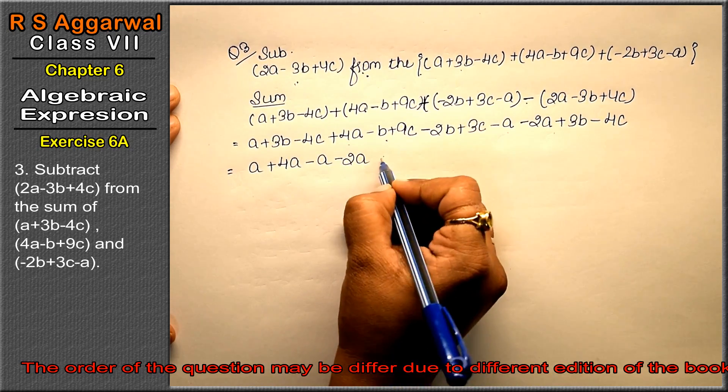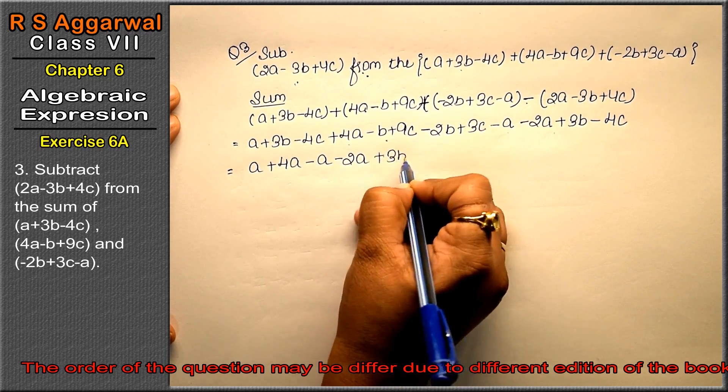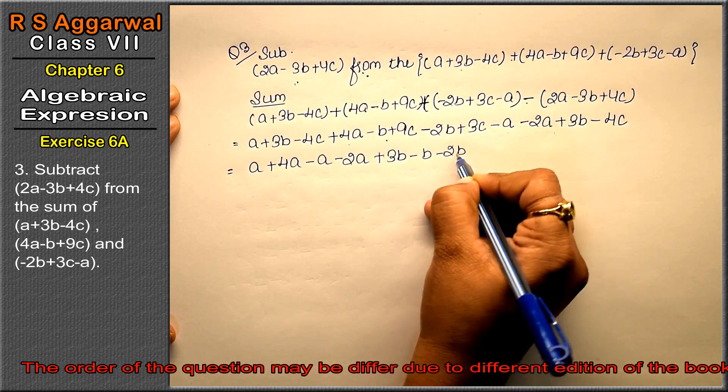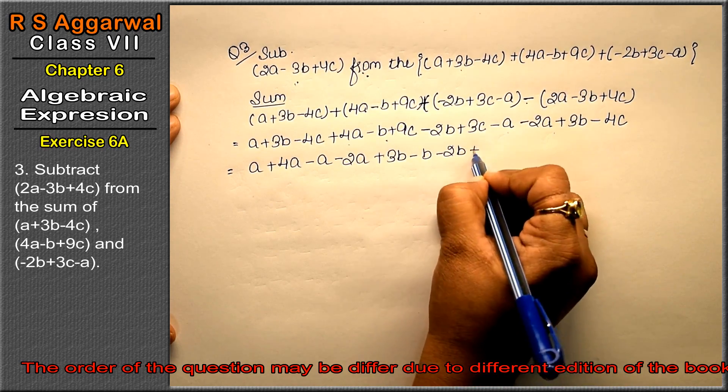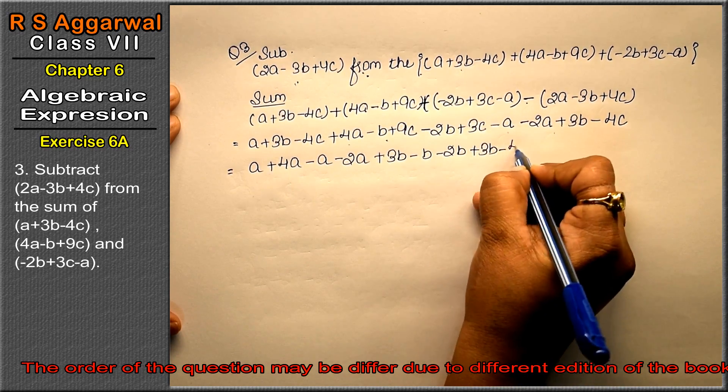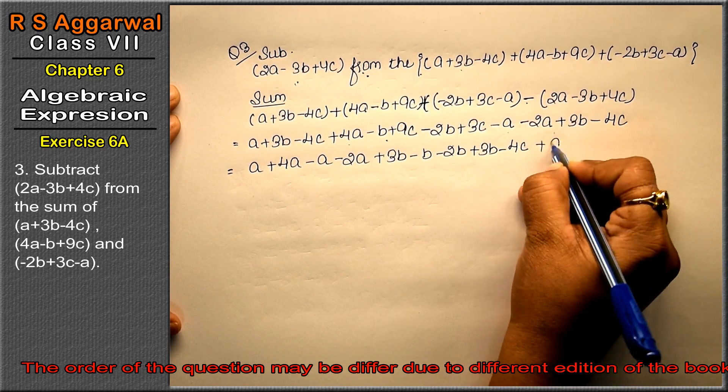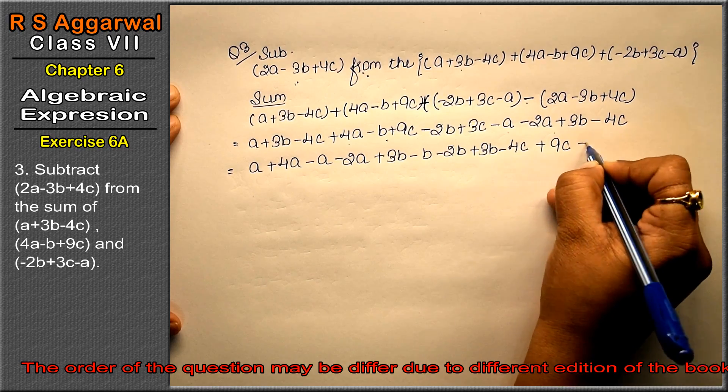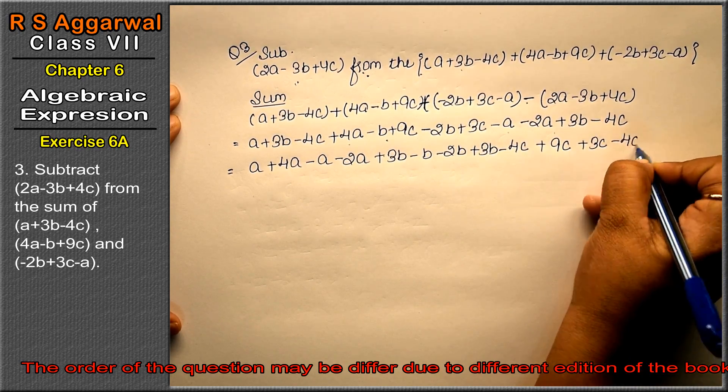The b terms: plus 3b minus b minus 2b and plus 3b, right friends? The c terms: minus 4c plus 9c plus 3c and minus 4c.